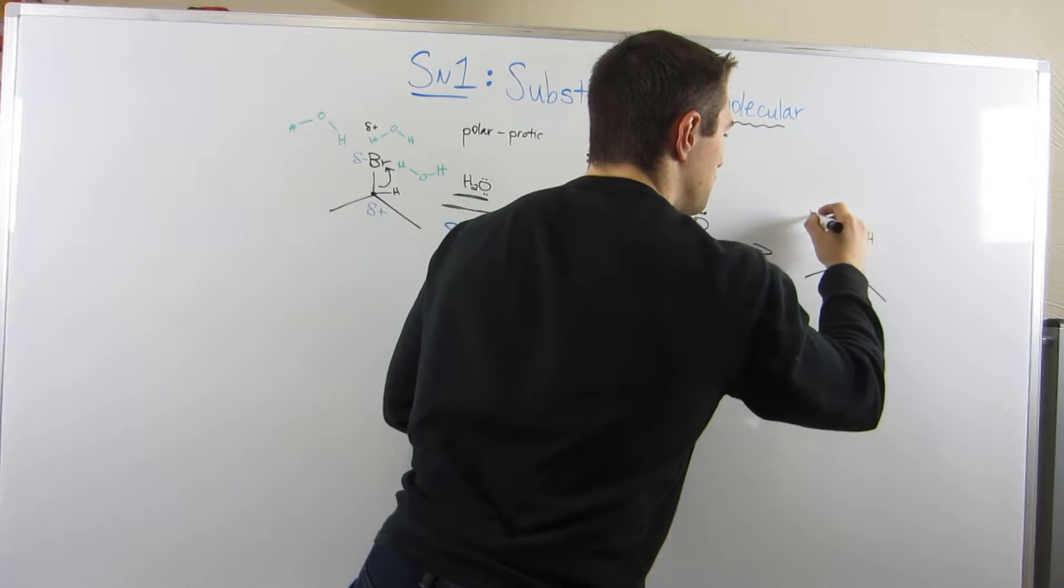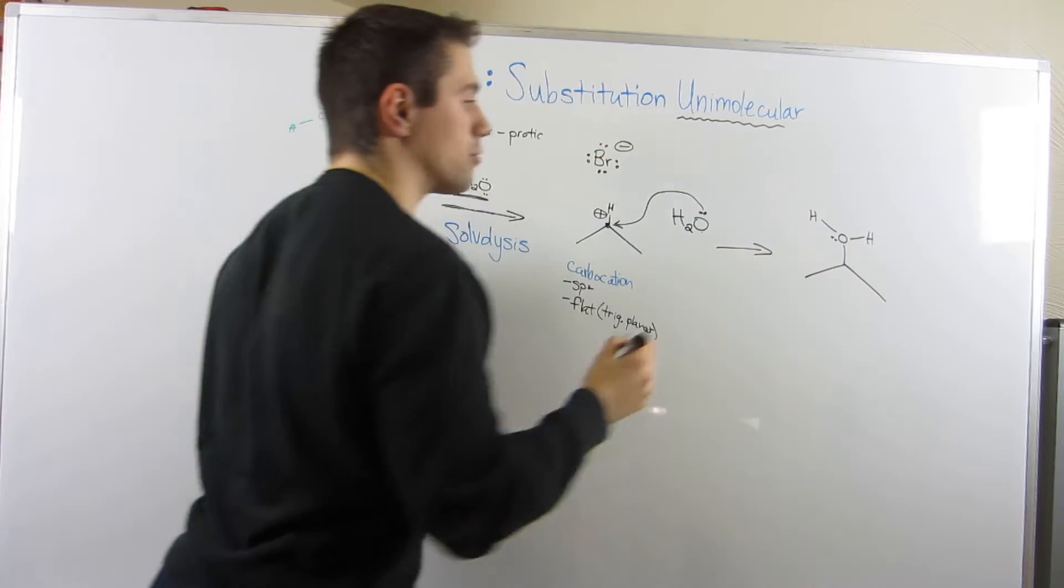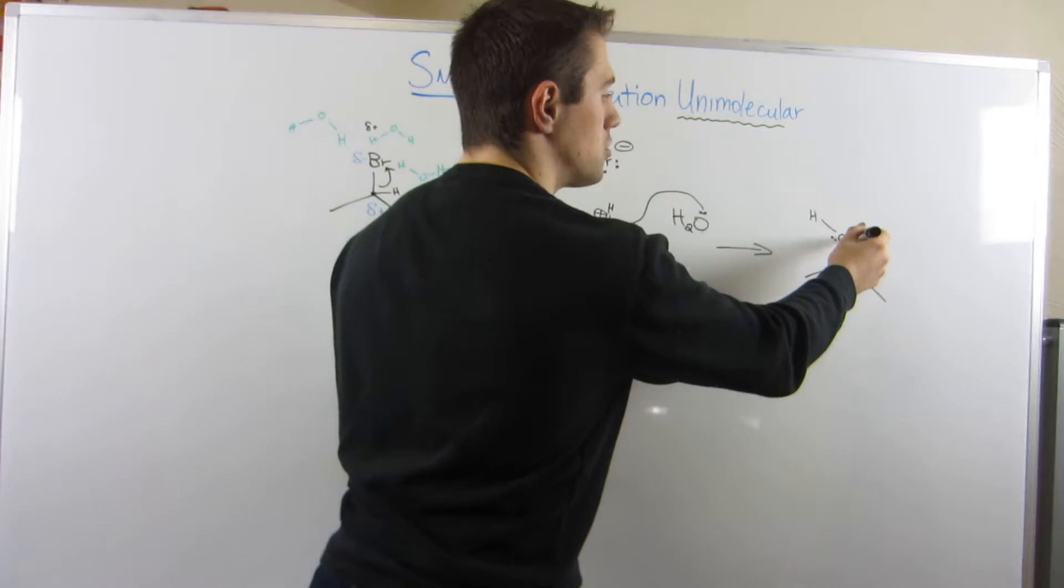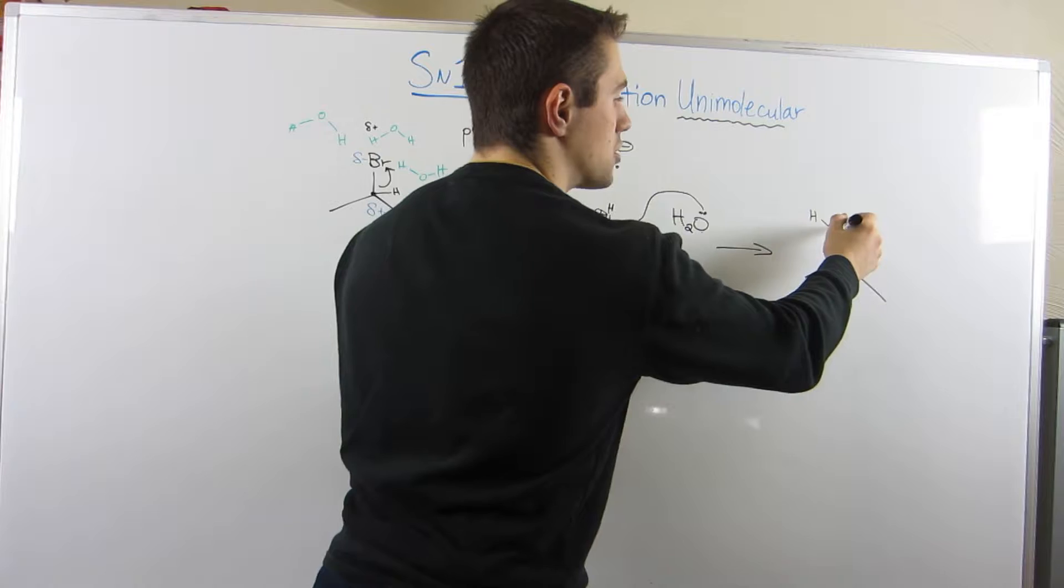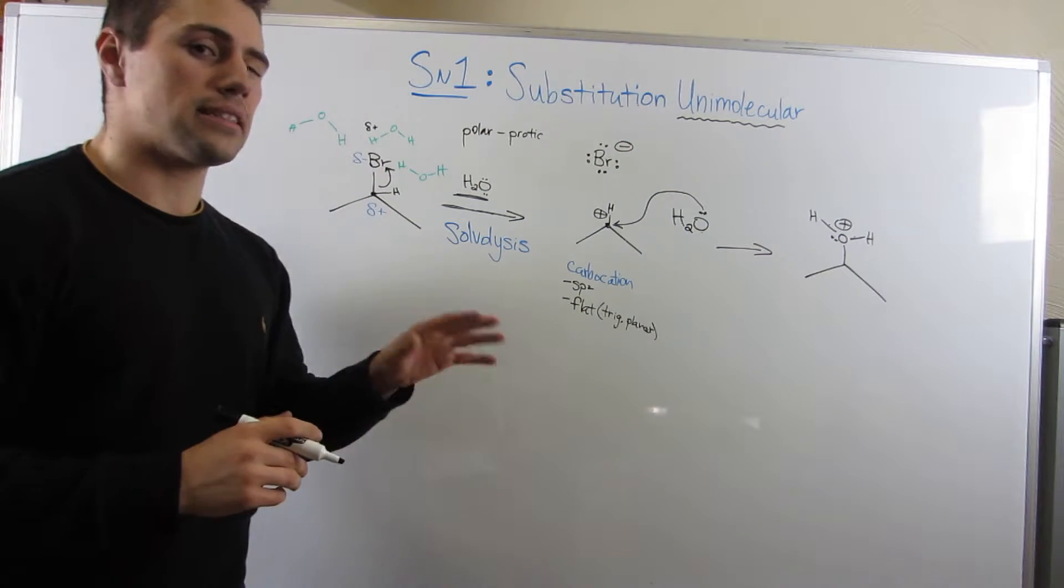Here's what we've got going on. I added H2O, and if we reevaluate oxygen's formal charge, because we just donated an electron pair, he's in control of 1, 2, 3, 4, 5. So he actually has a positive 1 formal charge. And he doesn't like to stick around like that.